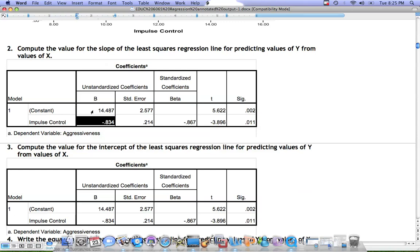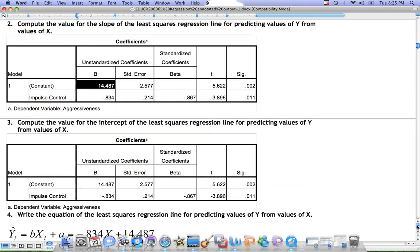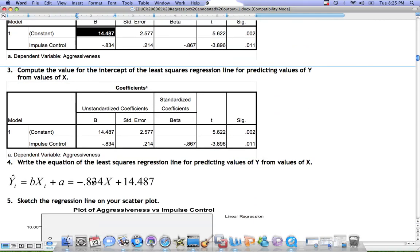The slope is negative 0.834 and the intercept is 14.487. We can use those values when we write the equation of the least squares regression line.